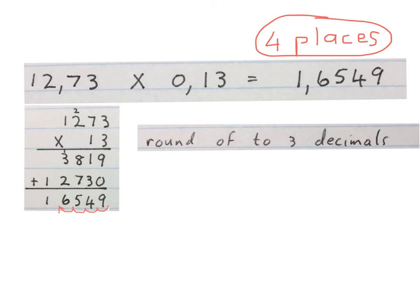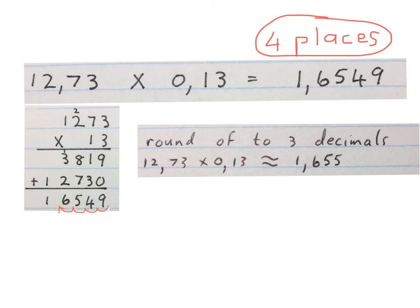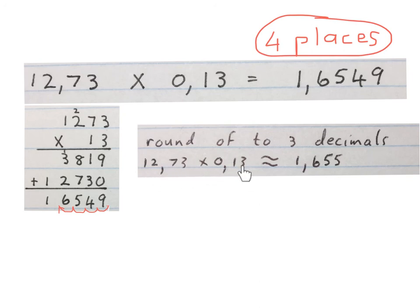They can go a little further on these questions and say round your answer off to three decimal places. You will then do everything that we've taught you, get to this answer, and then round it off to three decimals. You put your finger on the third decimal — it must be a 4 or it must become a 5. So 12,73 times 0,13 rounded off will be 1,655.